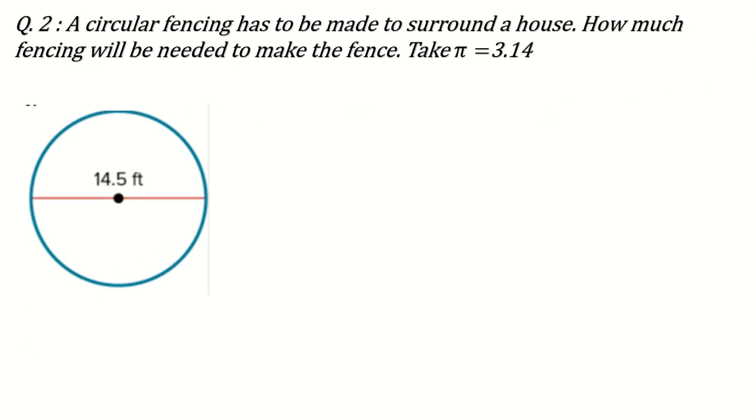Another question can be, a circular fencing has to be made. Whenever you are dealing with the fencing means border, it means we are talking about circumference. In this case also this is diameter. What is the formula for circumference? 2πr means π times diameter, that is 3.14. This is the value of π times value of d is 14.5. My dear students, value of π if it is written in the question that take 3.14, then definitely you are going to take 3.14 but if it is not given, sometimes you can also take 22 by 7 also. These are the two values of π.